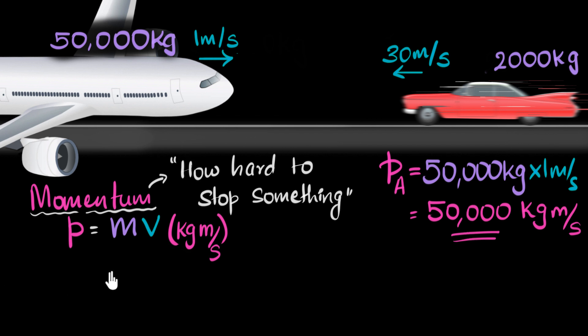Okay, let's do the car now. The momentum of the car, which we'll call Pc, C for car, that's going to be mass of the car, which is just 2,000 kilograms, times the velocity of that car, that's gonna be 30 meters per second.